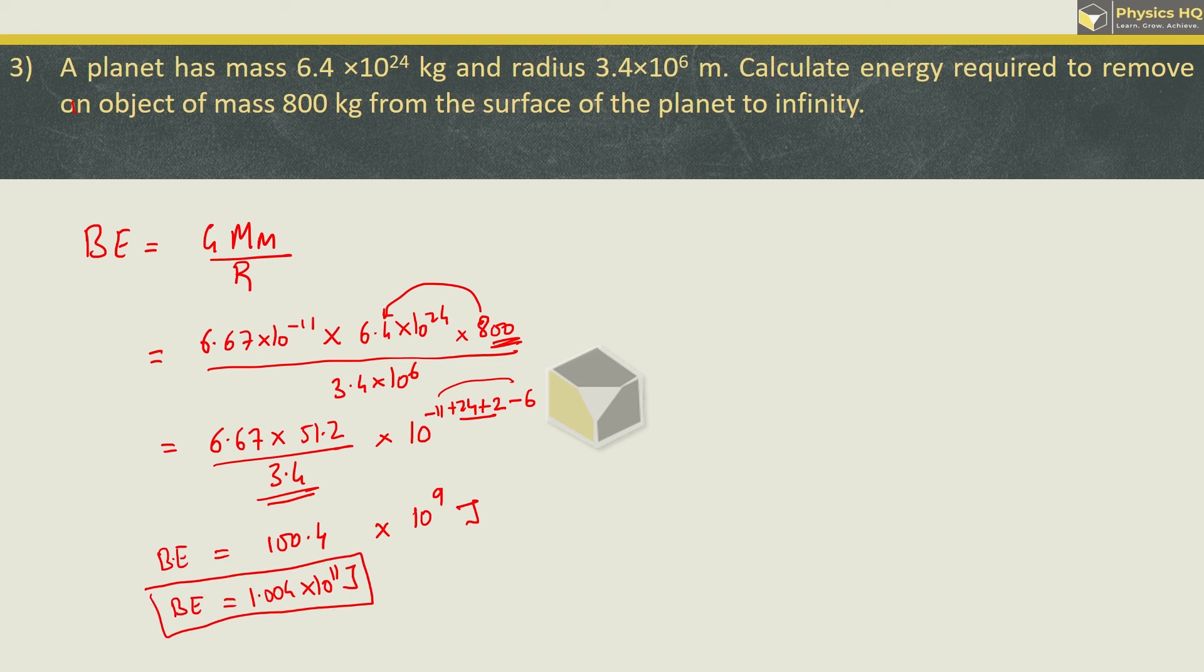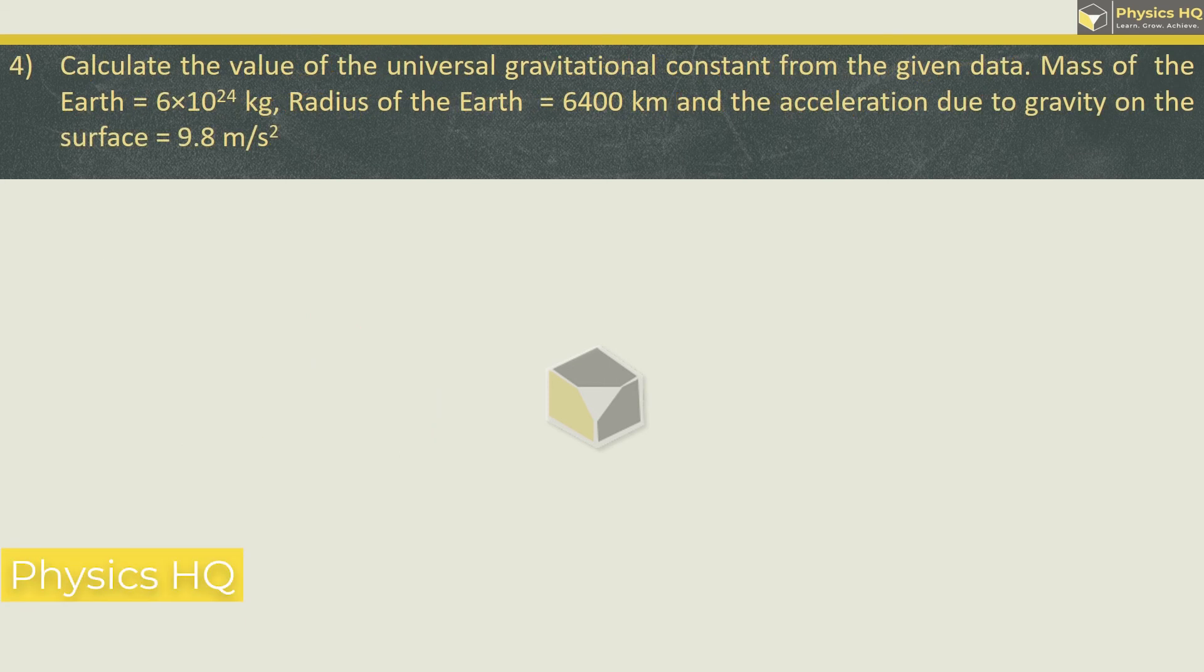Calculate the value of universal gravitational constant from the given data. Mass of the earth is 6 × 10²⁴, radius of the earth is 6400 kilometers, and acceleration due to gravity on the surface is 9.8 m/s². Acceleration due to gravity is given by GM/r², so from here, capital G equals g × r² divided by M. G value is 9.8, radius is 6.4 × 10⁶ meters squared, divided by 6 × 10²⁴.